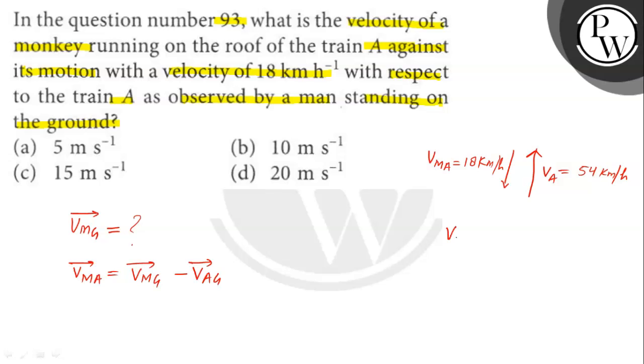Vag we have given a meter per second, that is 54 into 5 by 18 that is 3 times 15 meter per second.